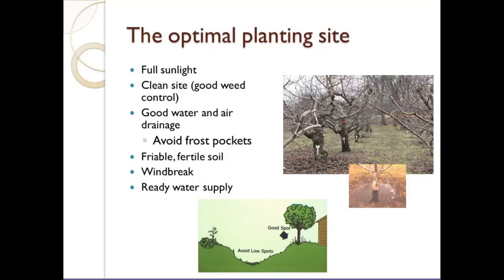Specialty crops are very susceptible to poor water drainage. When looking at soil characteristics, the word I want to use is 'friable' — a friable, fertile soil. Friable means it has a good texture: when you take a handful and squeeze it, it should hold its form somewhat, but when you apply pressure it should break apart easily. If you have drainage issues with tiling, you can also work on amending organic matter in your soil to break up heavy clay soils or improve sandy soils. Compost and other organic matter make the soil more friable.